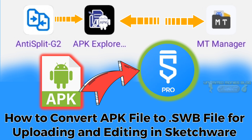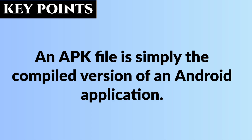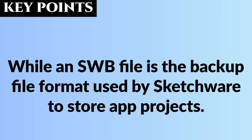Let's understand these two files: the APK file and the SW file. An APK file is simply the compiled version of an Android application, while the SW file is the backup file format used by Sketchware to store app projects. What we're going to do is take an APK file and convert it into a Sketchware project format so it can be edited.